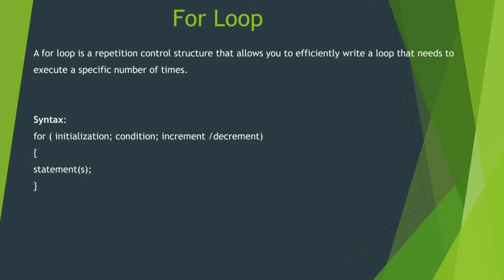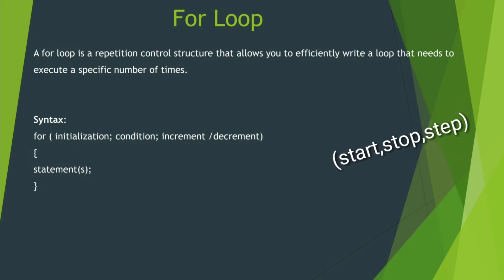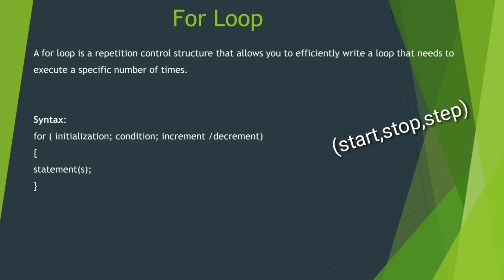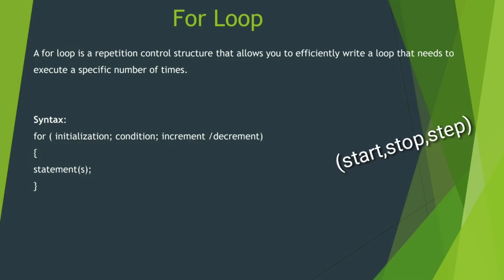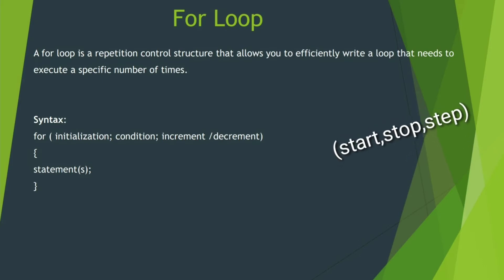The main one is For Loop. The syntax uses the 'for' keyword. The initialization is the starting position. Next is the Condition, which is the stopping position. The initialization will start, the condition will stop, and an Increment or Decrement Operator will be used.